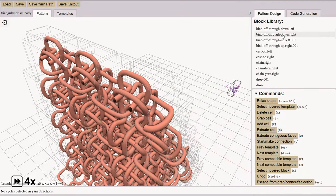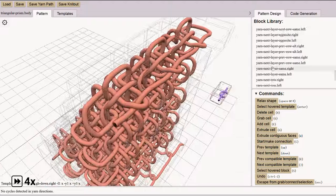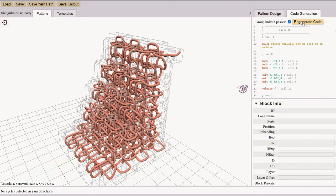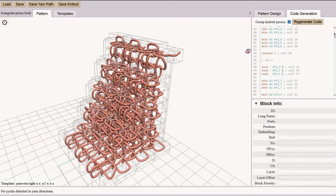Finally, we add some blocks to finish the design. After finishing the design, we click Regenerate Code, and our tool combines the code fragments from each block into a program for our machine.